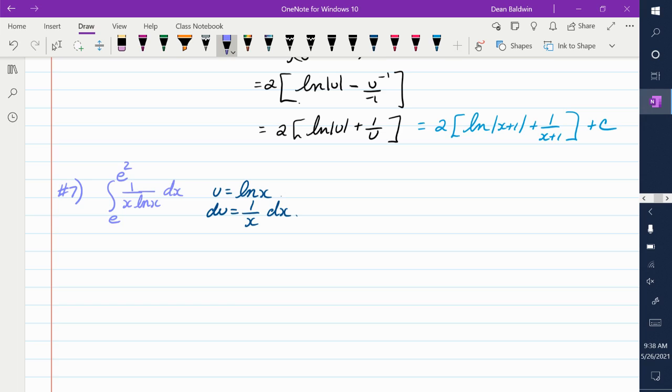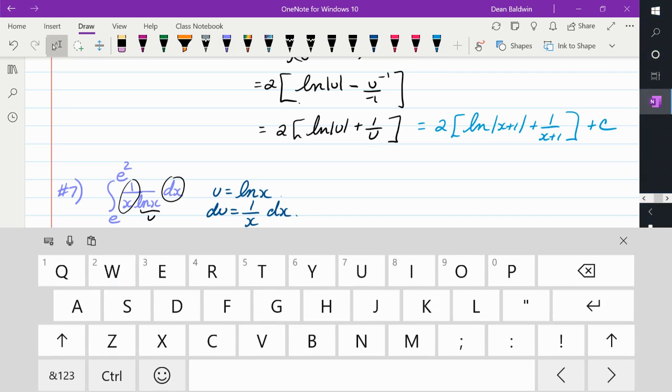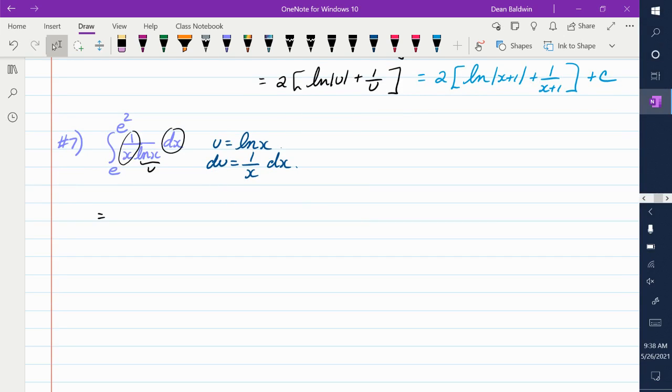So now we sub out everything we can. So our new integral, that's u. 1 over x dx is equal to du. So now I've got the integral 1 over u, du.